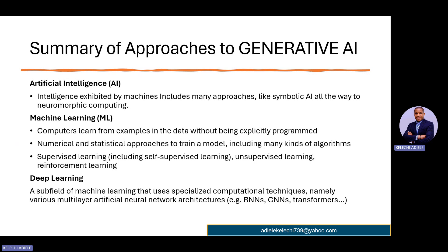Then we have deep learning, which is a subfield of machine learning that uses specialized computational techniques — namely various multi-layer AI neural network architectures. Deep learning basically talks about gaining more insight into the dataset — it stretches the machine to really dig deeper. It's like when you're drilling for crude oil: you have to drill deep into the earth to really get to the source. So deep learning gives the machine the ability to drill down into the data and make the best use of the information within that dataset. There are different architectures — RNNs, CNNs, Transformers, and the rest of them — but we won't go into those details here.